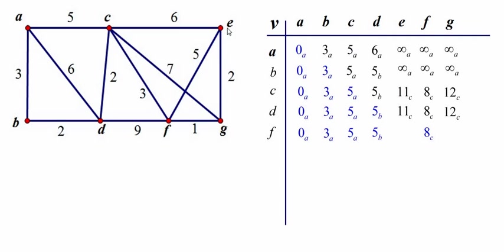Well, to get to E would add 5 more onto the 8. That would be 13, and I already have 11, so I'm going to leave that alone. To get from F to G is going to add a length of 1, 8 plus 1 is 9, so that's better than the 12 that I had. So I'm going to put that down, and now I'm done with that step.